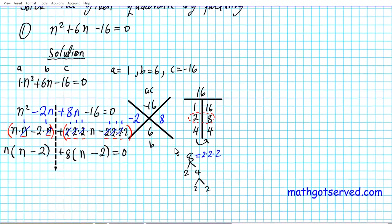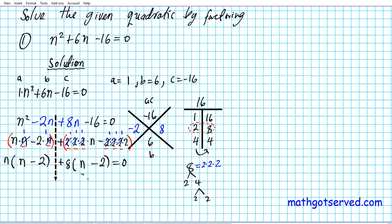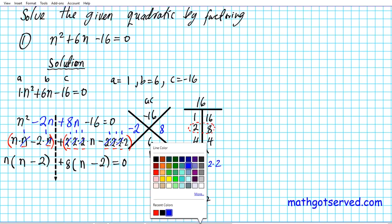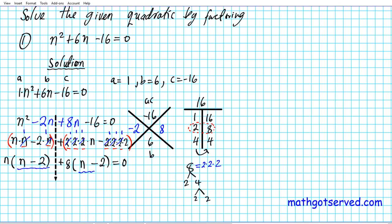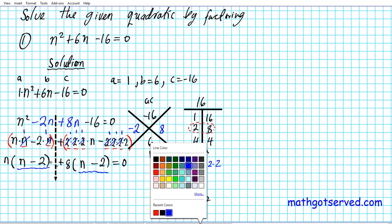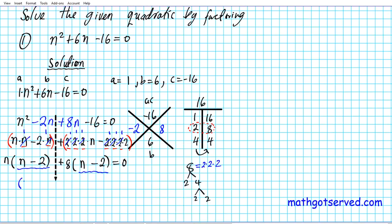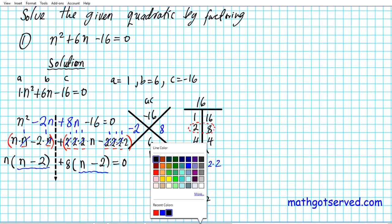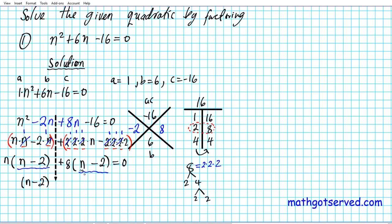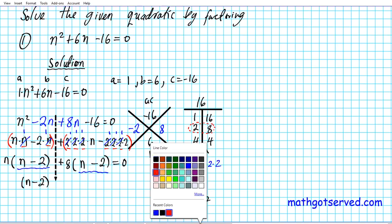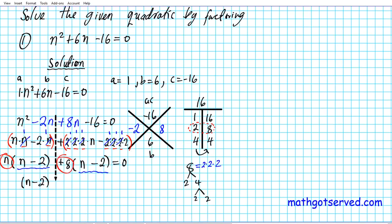We do a quick check: the quantities in both parentheses are identical — both are (n minus 2). This confirms we're on the right track. Now we factor out the common binomial (n minus 2) from the entire expression. Factoring out (n minus 2) — as though dividing both terms by it — leaves us with (n minus 2)(n plus 8) equals 0.